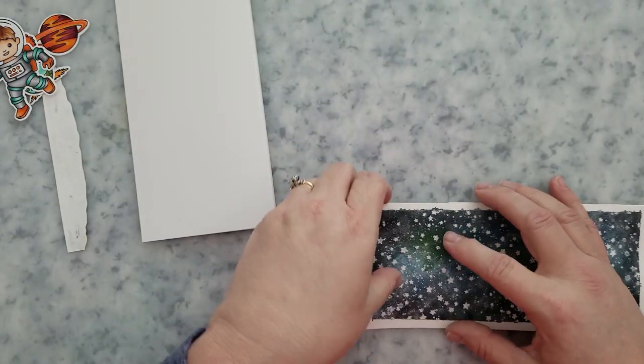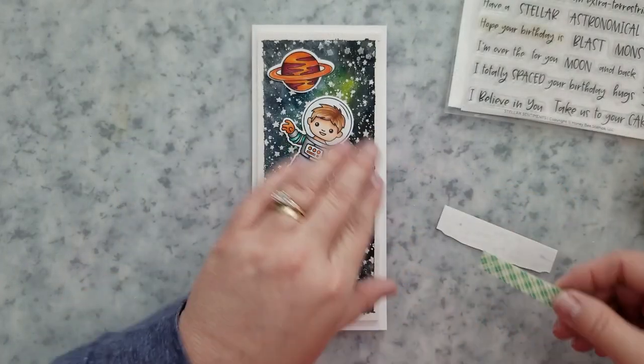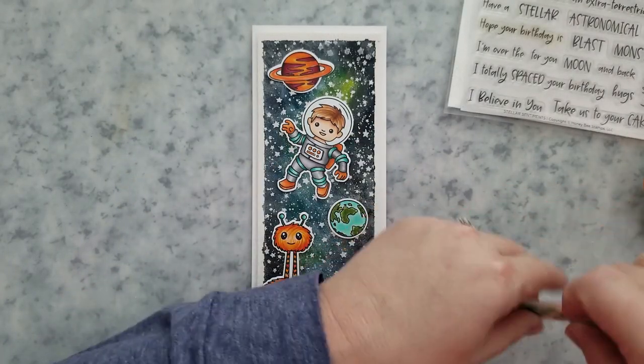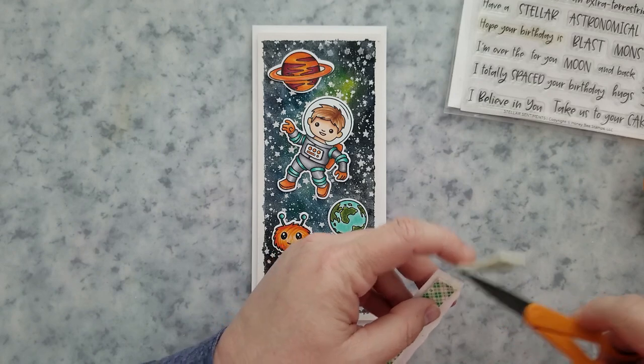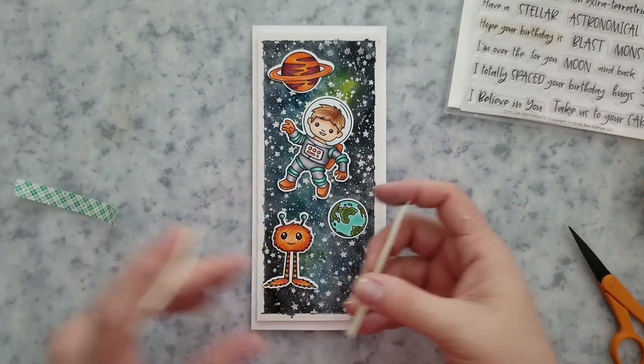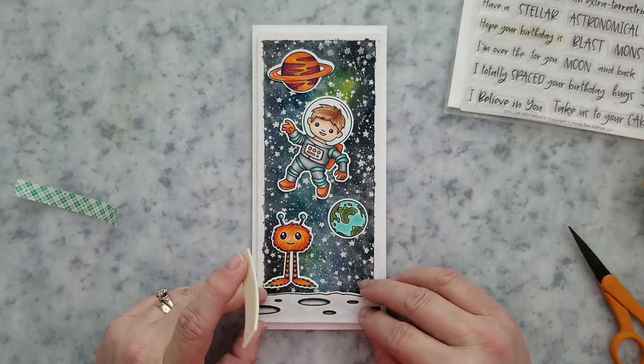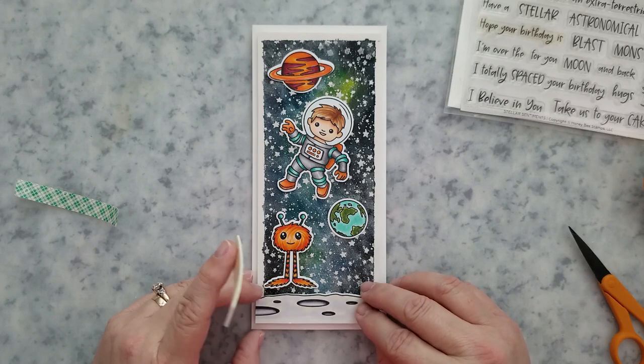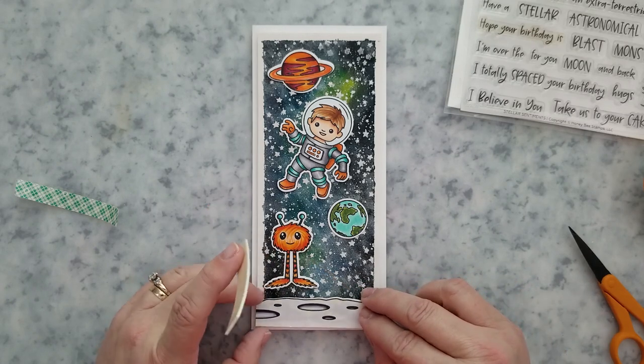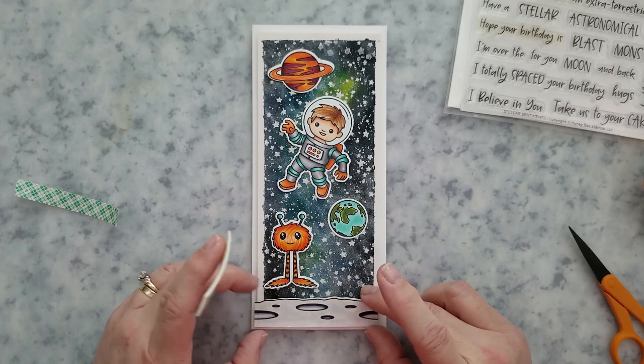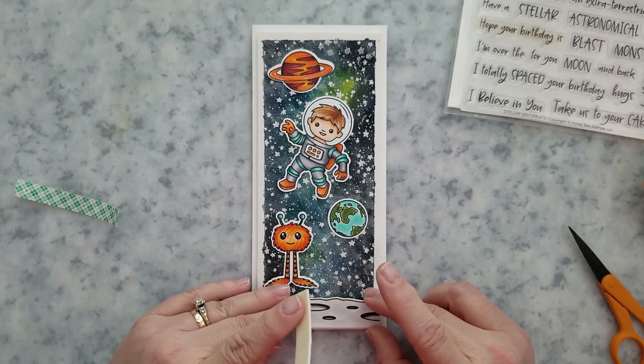I'm going to go ahead and start arranging all of the colored images. Now I'm using mounting foam to add these. So I'm going to use mounting foam to go ahead and place the moon down, the little astronaut and the monster. And then we're going to use liquid adhesive on the planets. And we're going to adhere those straight to the card.